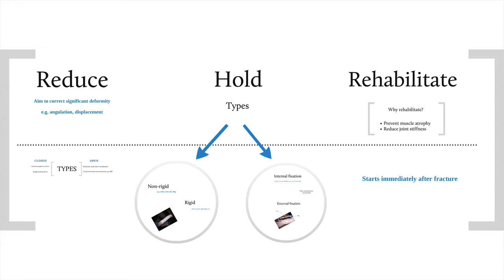Hold. Immobilising a fracture holds the fragments in place to relieve pain and allow healing. Immobilisation is a balance between bony healing whilst avoiding the stiffness of surrounding soft tissues. This is most important in the hand, where prolonged immobilisation can result in permanent stiffness and loss of function.